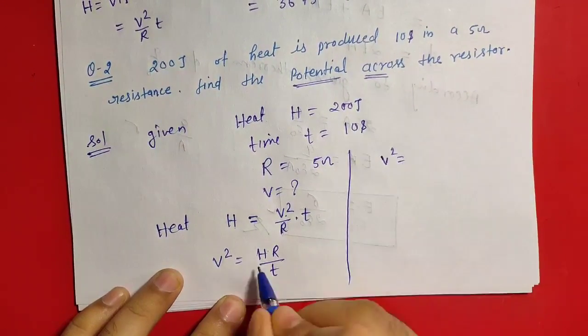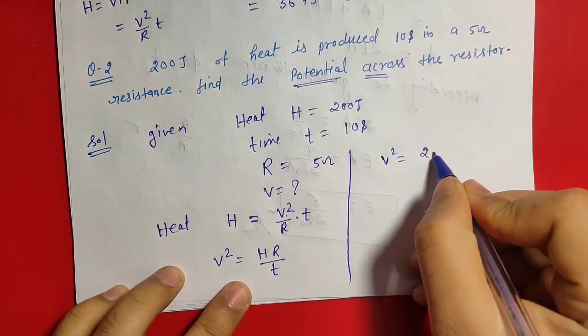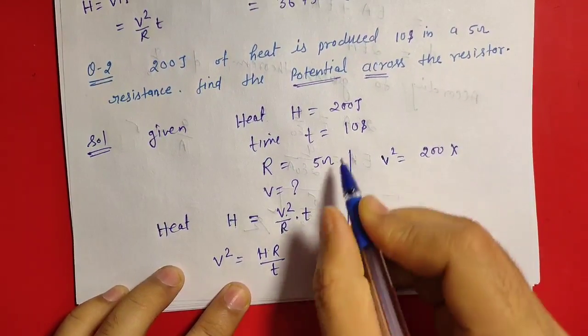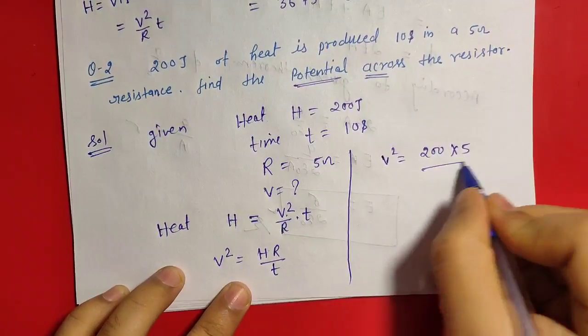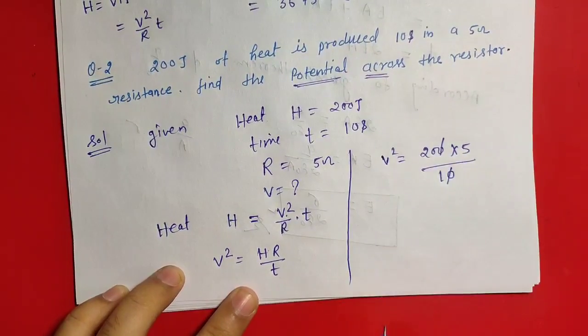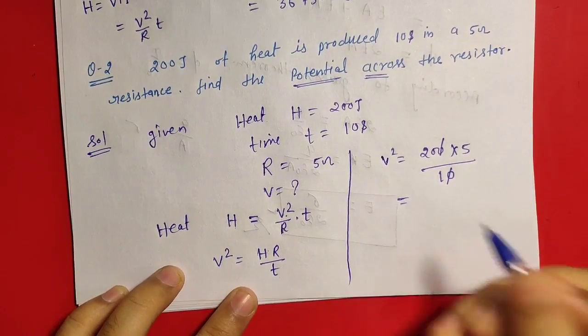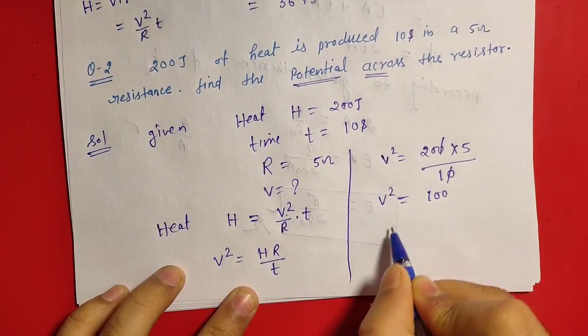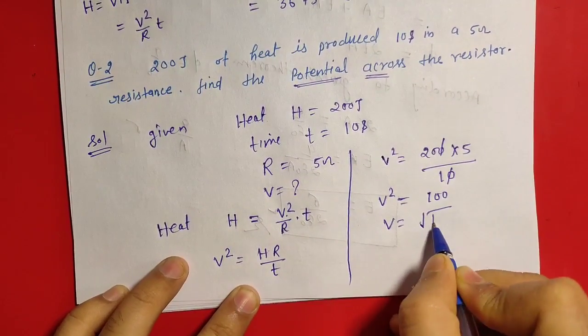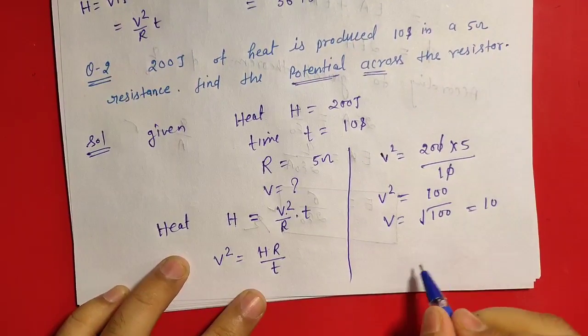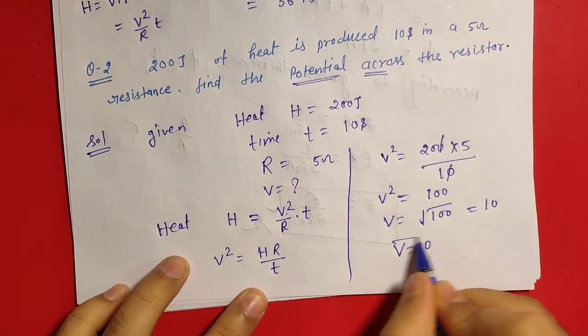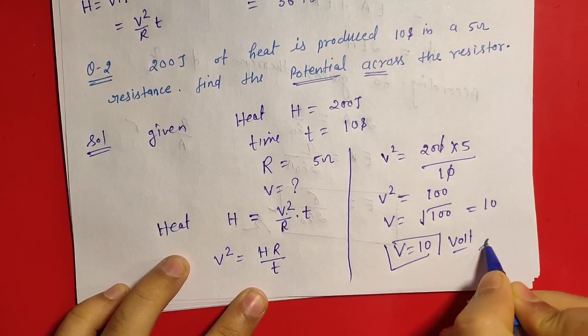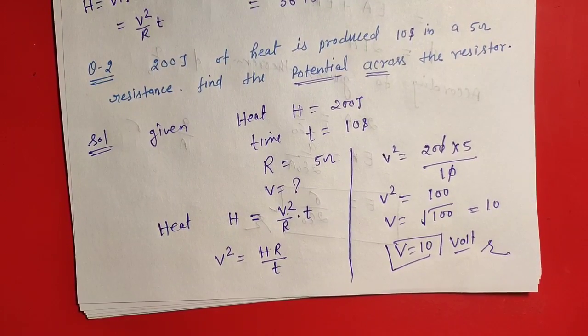Now V square is equal to H it is 200, value of R is 5, by T 10 seconds. Divide by T so 200 by 5, multiply by T so here is 100. So V square is equal to 100, V is equal to square root of 100. V is equal to 10, it means the potential difference is 10 volt. Clear?